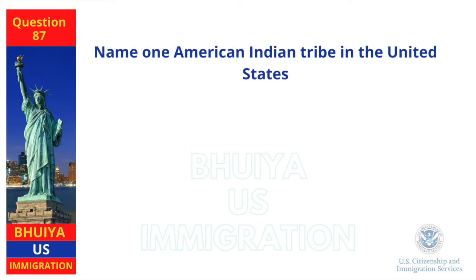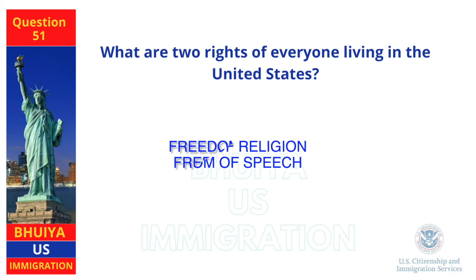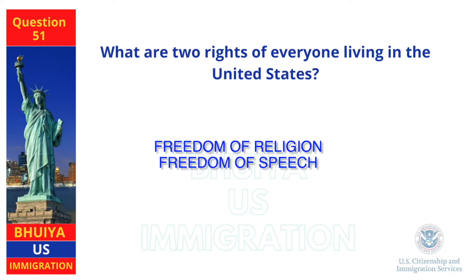Name one American Indian tribe in the United States. Cherokee. What are two rights of everyone living in the United States? Freedom of religion, freedom of speech.